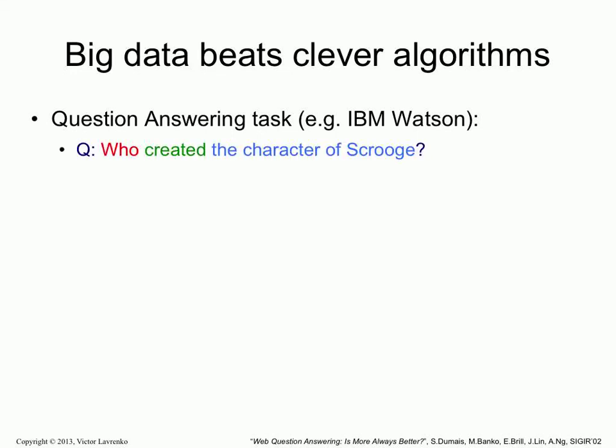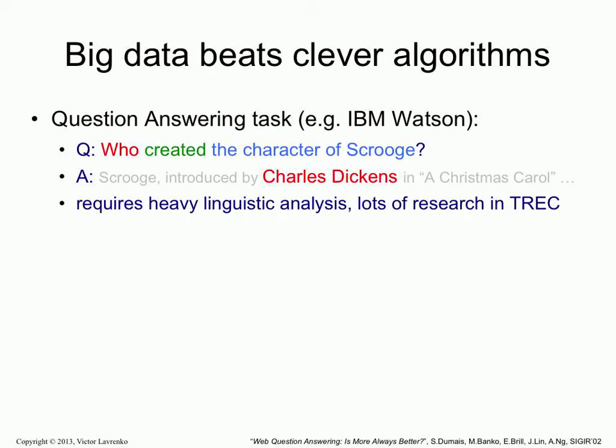In a question answering system, you're given a question — something like, who created the character of Scrooge? — and the system is supposed to say Charles Dickens automatically, by analyzing some resource. The trick is you don't have a database where you have all of these questions answered. What you have is an unstructured resource where the information may be hidden in text — so perhaps: Scrooge was introduced by Charles Dickens in the following story. Your QA system has to analyze this resource and figure out how to answer questions based on that.